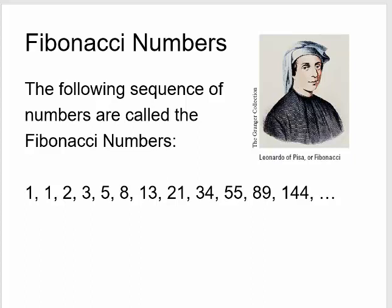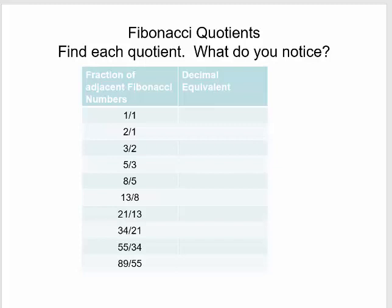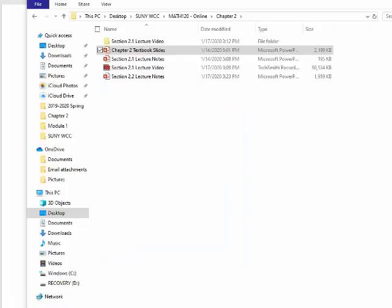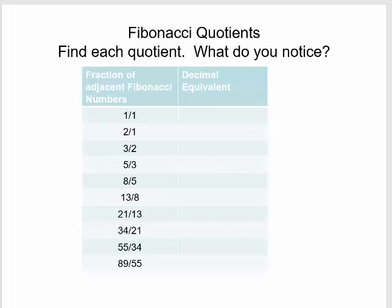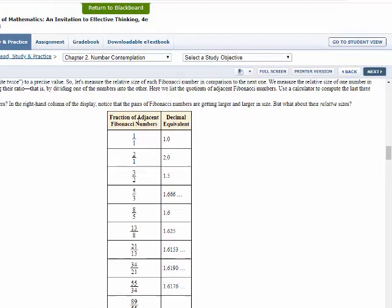Something really cool happened when we started looking at what are called the Fibonacci quotients. What we want to do is find each quotient and notice what happens. You take the fraction of adjacent Fibonacci numbers — divide each Fibonacci number by its previous number. So: 1 divided by 1, 2 divided by 1, 3 divided by 2, 5 divided by 3, 8 divided by 5, and so on. This is listed in your textbook, and when you start figuring out these Fibonacci quotients, you get the following.